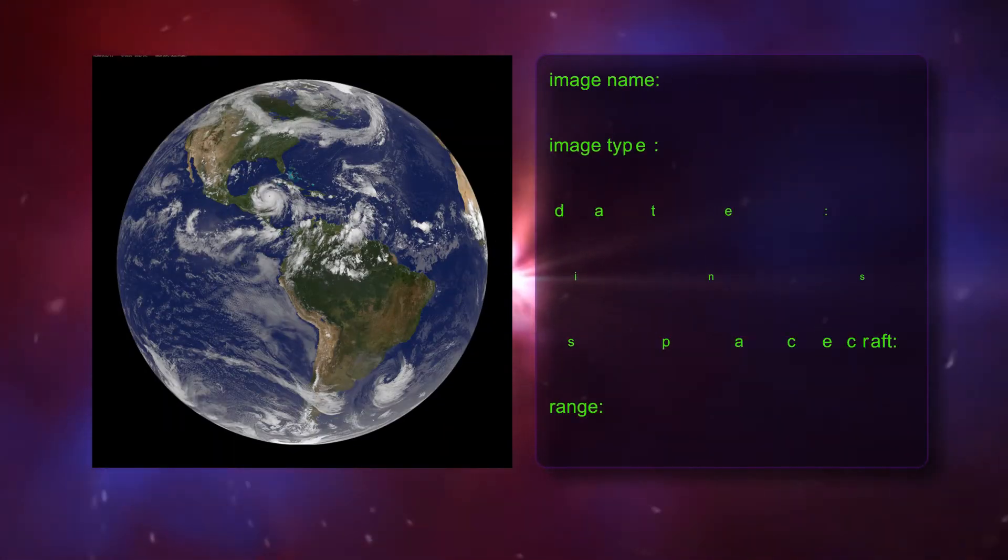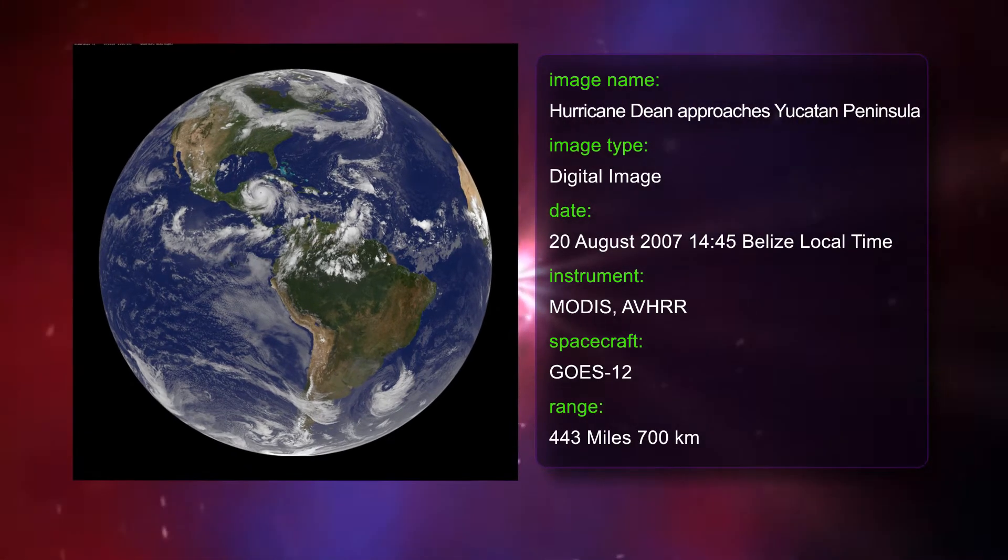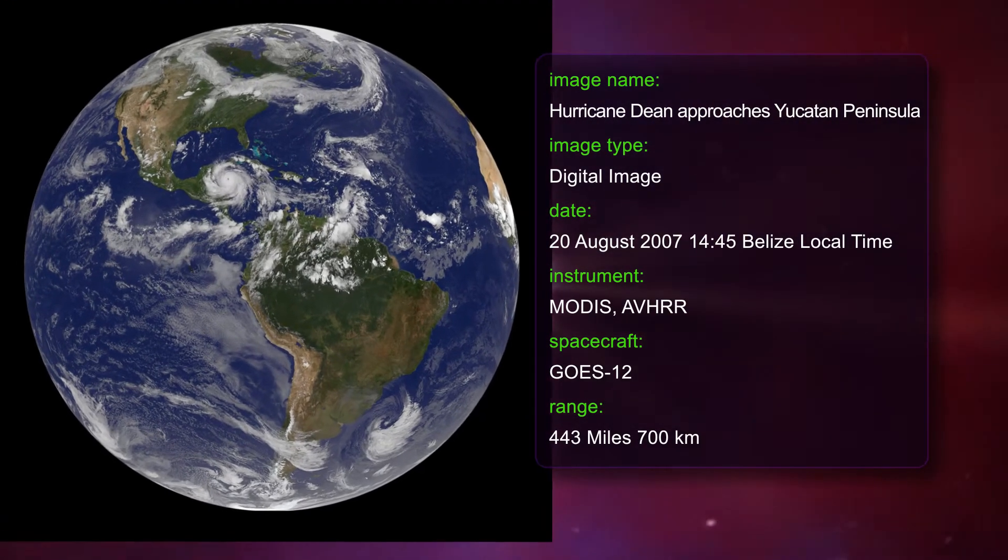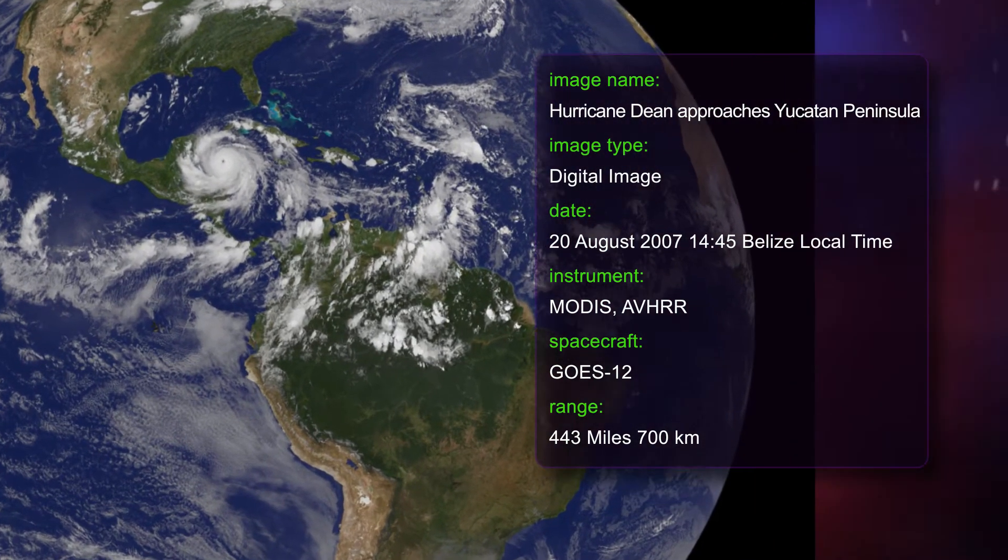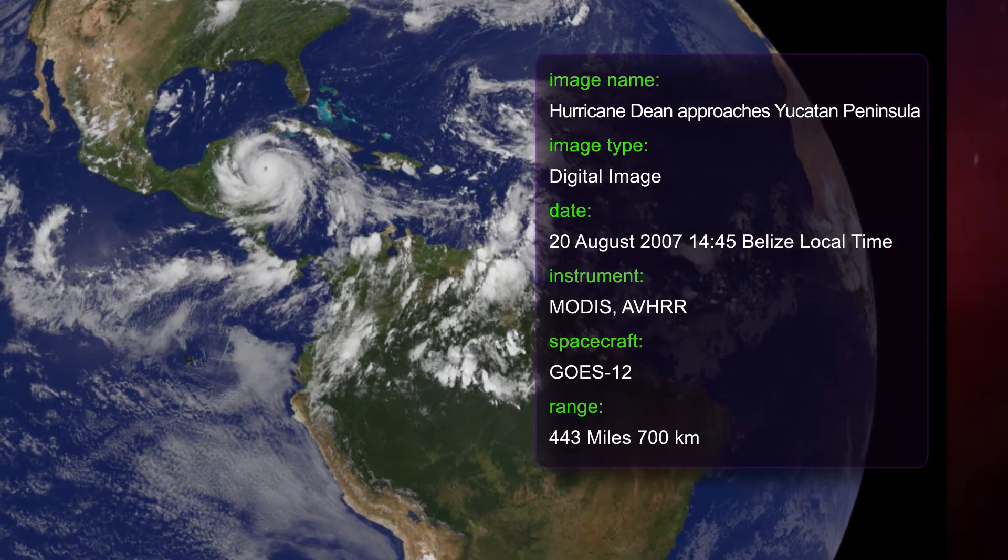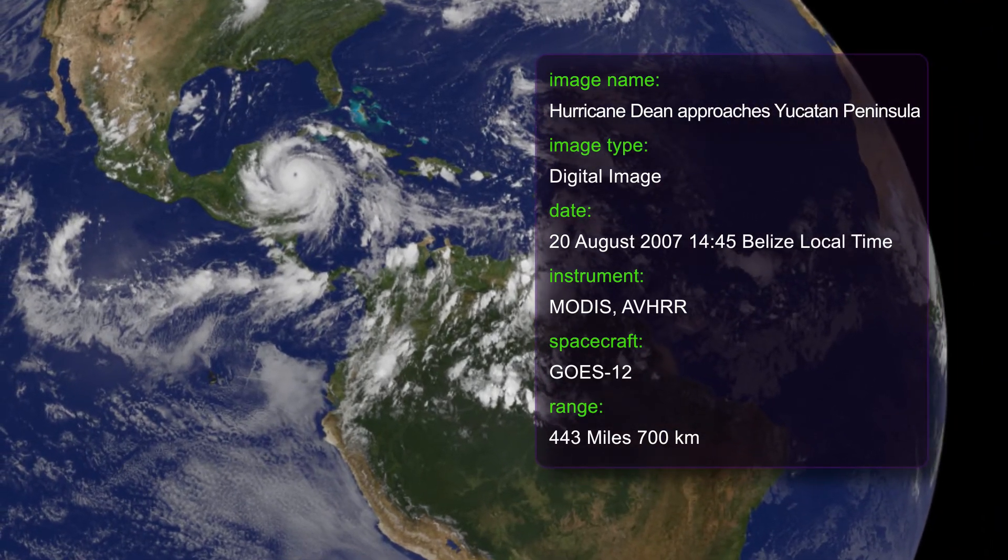This image shows Hurricane Dean arriving at the Yucatan. The clouds including Hurricane Dean were observed by NOAA's GOES-12 satellite on August 20th 2007. The land surface is a summertime image from NASA's Blue Marble image collection.